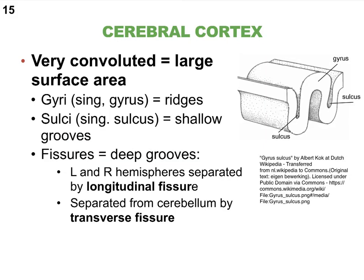Remember last time I introduced you to the four major parts of the brain. They are the cerebrum — the biggest part, which we can also refer to as the cerebral hemisphere — the diencephalon, then the brain stem, and finally the cerebellum. Those are your four major parts, and as I explained last time, each one of those parts always has three subparts.